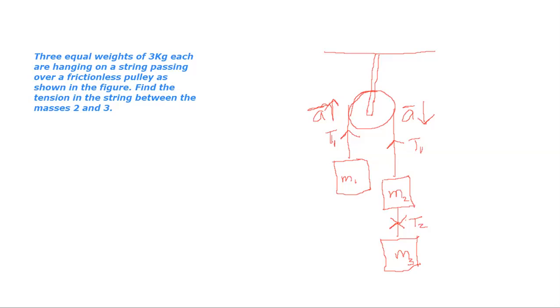Three equal weights of 3 kg each are hanging on a string passing over a frictionless pulley as shown in the figure. Find the tension in the string between the masses 2 and 3.